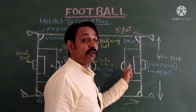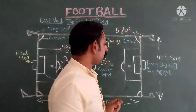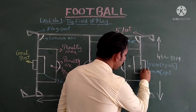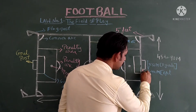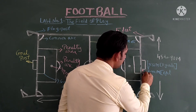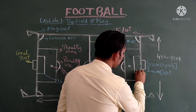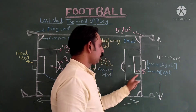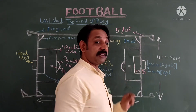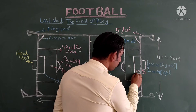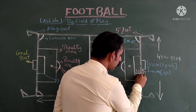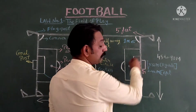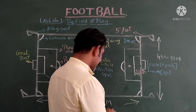Now let us know the measurement of the goal kick area. From the goal post pole, the measurement extends 5.5 meters on each side and 5.5 meters in front. This forms our goal kick area.